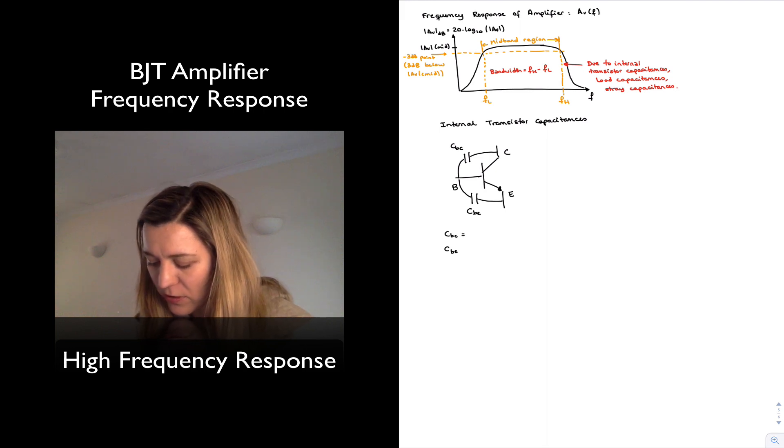You will oftentimes see CBC, the base to collector junction capacitance, represented as COBO. That will be the case, for example, of the 2N3904.